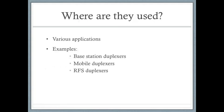Duplexers are designed for various applications based on operational frequency and utility. For example, mobile duplexers are designed to handle low power and are very compact in size. Base station duplexers are designed to handle higher base radio power and are generally designed to be mountable in standard equipment racks. All RFS duplexers are designed to provide high isolation between the transmit and receiver ports.